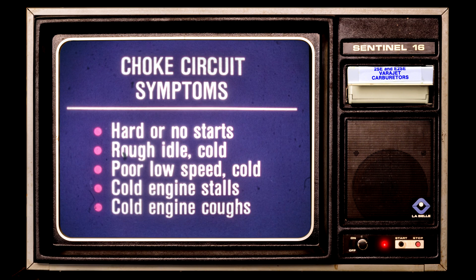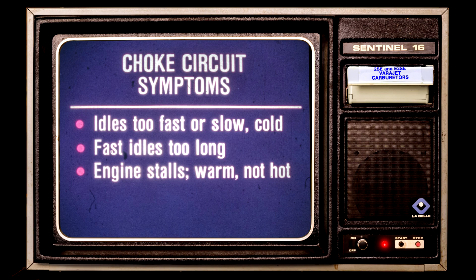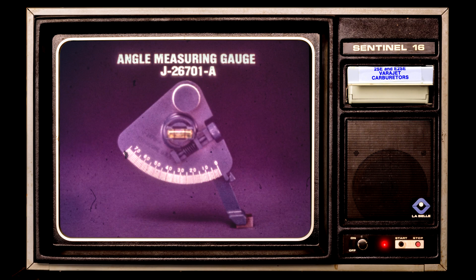Common symptoms of a defective choke include the engine not starting, rough or poor idle at low cold speeds, stalling or coughing when cold, idling too fast or too slow, fast idling too long, or stalling while warming up. A defective choke circuit is the most common carburetor problem.